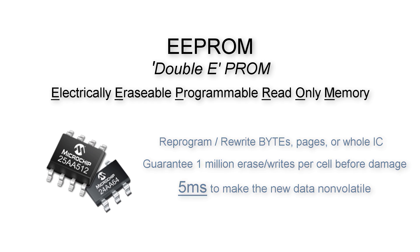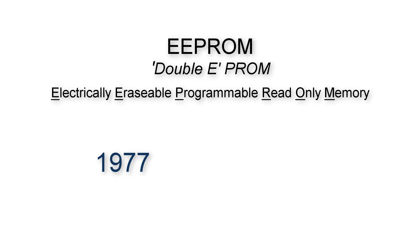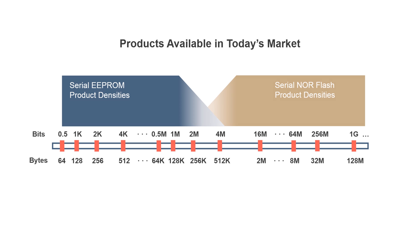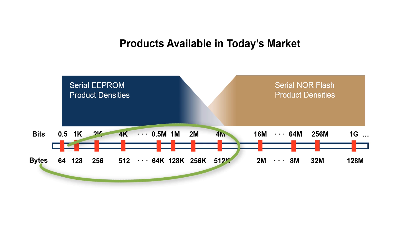Double EEPROM integrated circuits entered the market about 40 years ago, about the same time the first Apple computer was sold. Hundreds of millions of these parts still ship each year. However, double EEPROMs only survive today at the smallest densities — 1 kbit up to about 4 megabit.